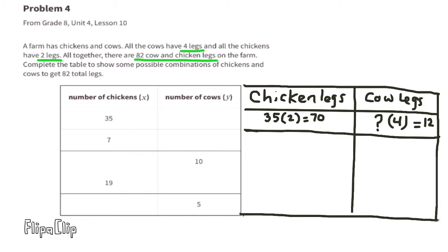Problem number 4 from 8th grade, Unit 4, Lesson 10. A farm has chickens and cows. All the cows have 4 legs and all the chickens have 2 legs. Altogether, there are 82 cow and chicken legs on the farm. Complete the table to show some possible combinations of chickens and cows to get 82 total legs. If there are 35 chickens: 35 times 2 equals 70 legs. So 82 minus 70 equals 12. What number times 4 equals 12? 3 times 4. So if there were 35 chickens, there would be 3 cows.